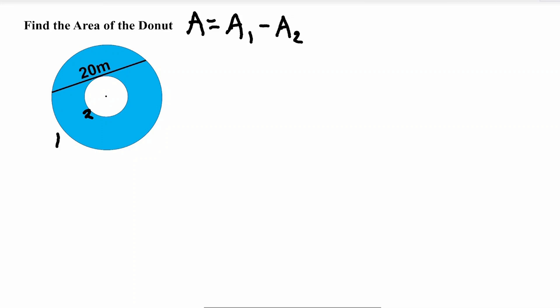So as you can probably recall, the equation for an area of a circle is pi times r squared with r being the radius.